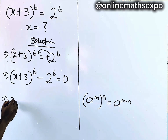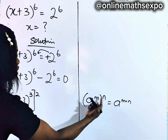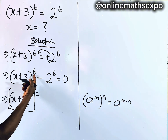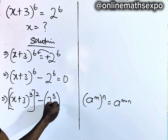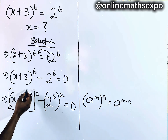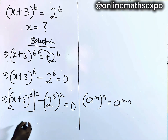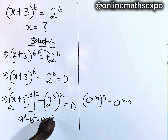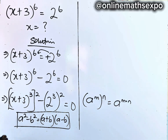That gives us (x + 3)^3 raised to the power of 2, minus 2^3 raised to the power of 2, equal to 0. If you multiply the powers it gives you back 6. Now what you observe is that the difference of these two squares reminds you of a² − b² = (a + b)(a − b), which is the difference of two squares.